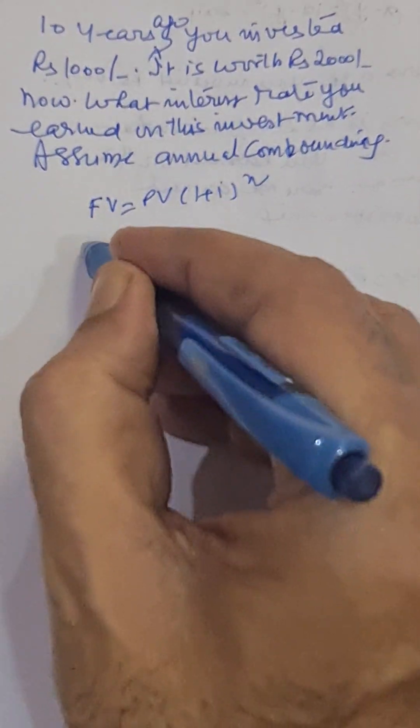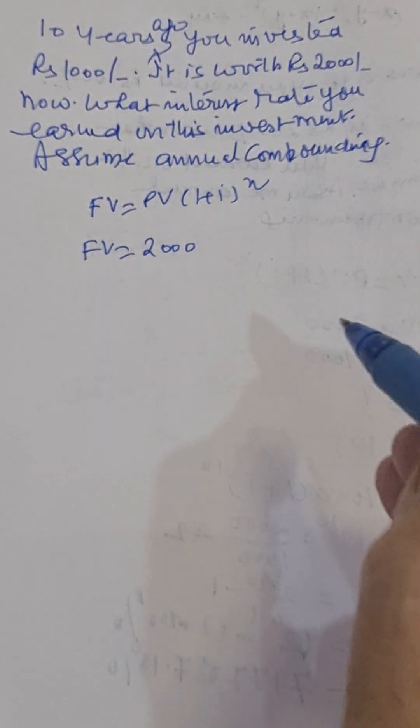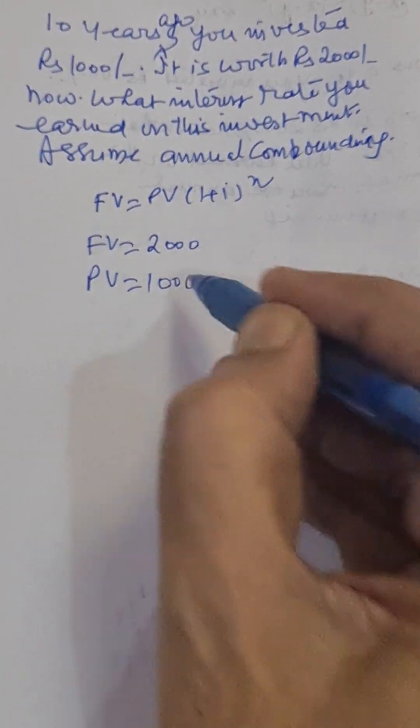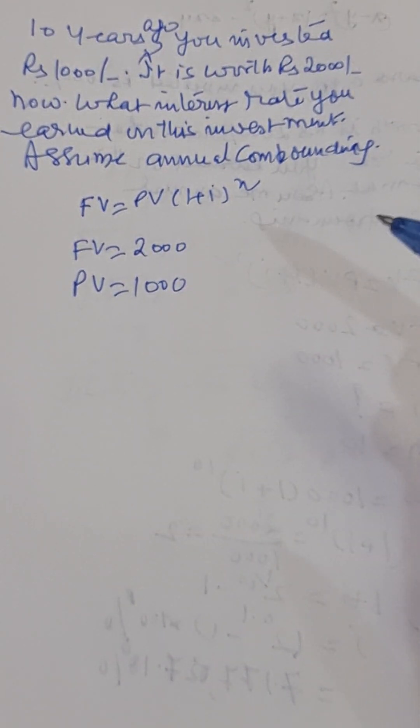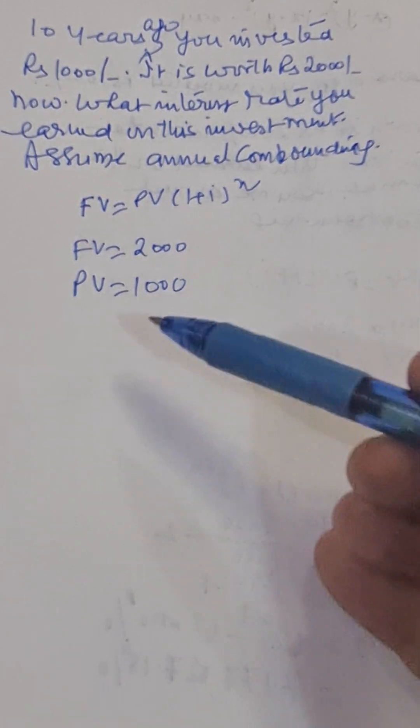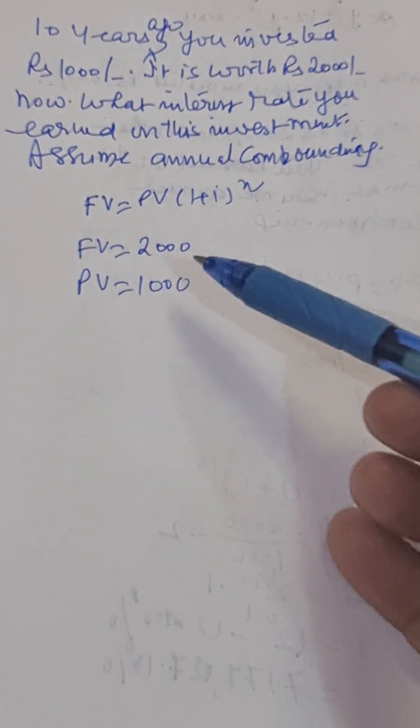Here FV is equal to two thousand and PV equal to one thousand. FV is two thousand because after ten years investment of thousand rupees becomes two thousand. So present value is thousand rupees and future value is two thousand.